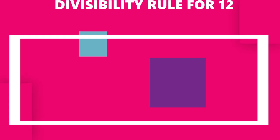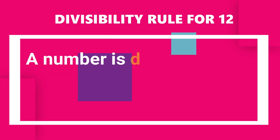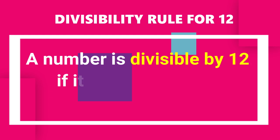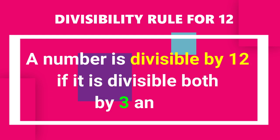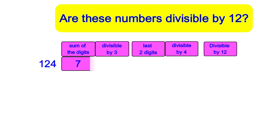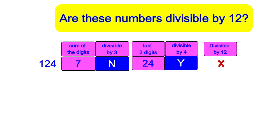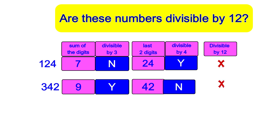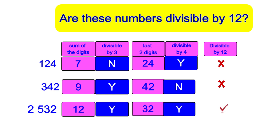Let's talk about the divisibility rule for 12. A number is divisible by 12 if it can be divided both by 3 and 4. Let's try these examples. In the first two examples, only one condition is met, so both are not divisible by 12. In the third example, both conditions are met. Therefore, 2532 is divisible by 12.